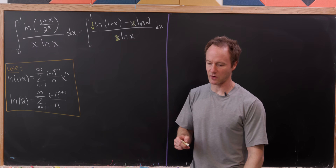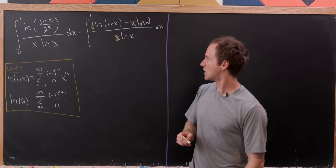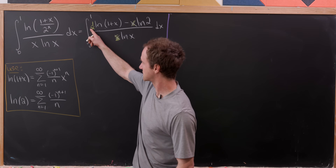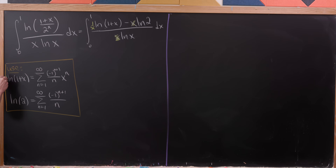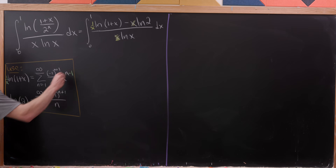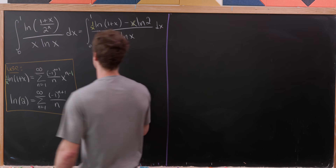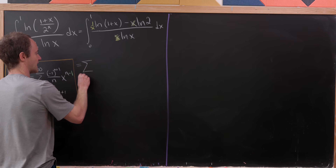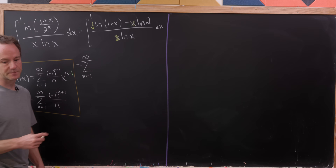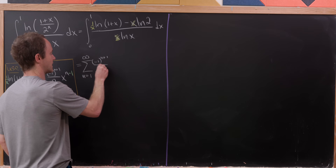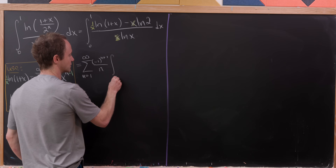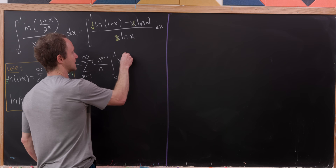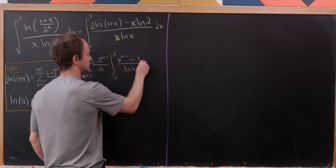We bring the sum out of each term and observe that the 1/x factor knocks the exponent down from n to n−1. This leaves us with the sum as n goes from 1 to infinity of (-1)^(n+1) / n, times the integral from 0 to 1 of (x^(n−1) − 1) / ln(x) dx.